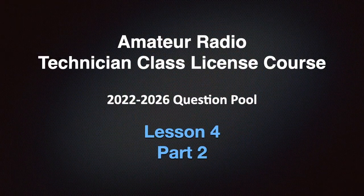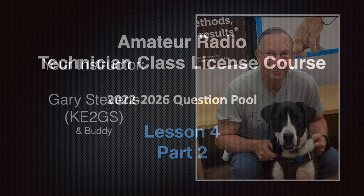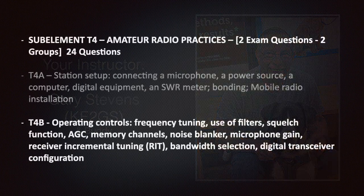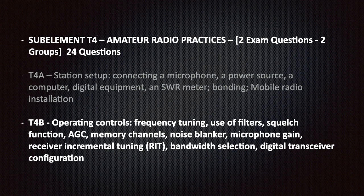Are you ready to learn? Let's get started. This video is Lesson 4 Part 2 of my amateur radio technician class license course, covering the 2022 to 2026 question pool. I'm Gary Stevens, your instructor. My call sign is KE2GS. I hold an amateur extra license. I've been an amateur operator since 2001, amateur extra since 2014, and I have been teaching amateur radio for over 15 years.